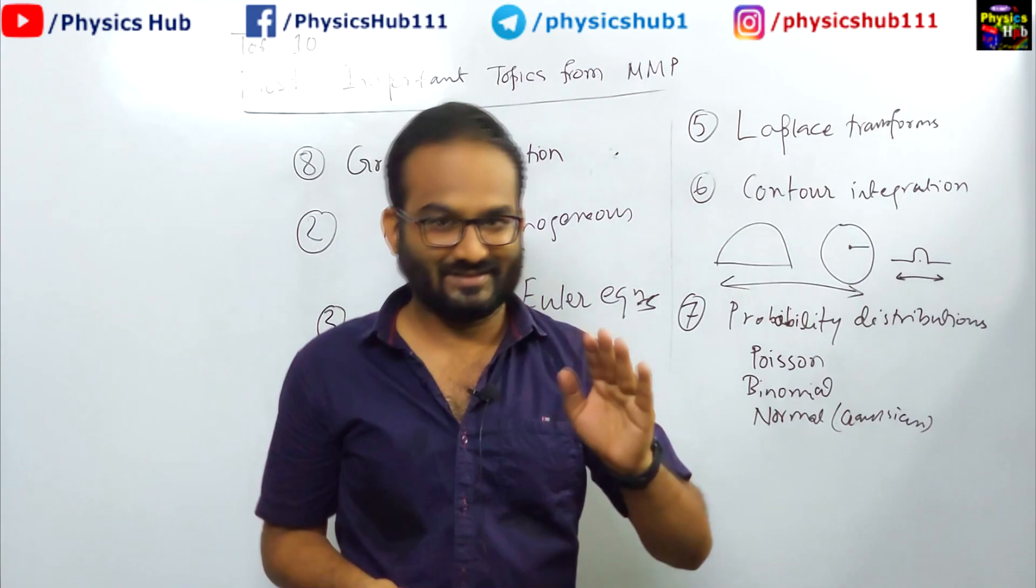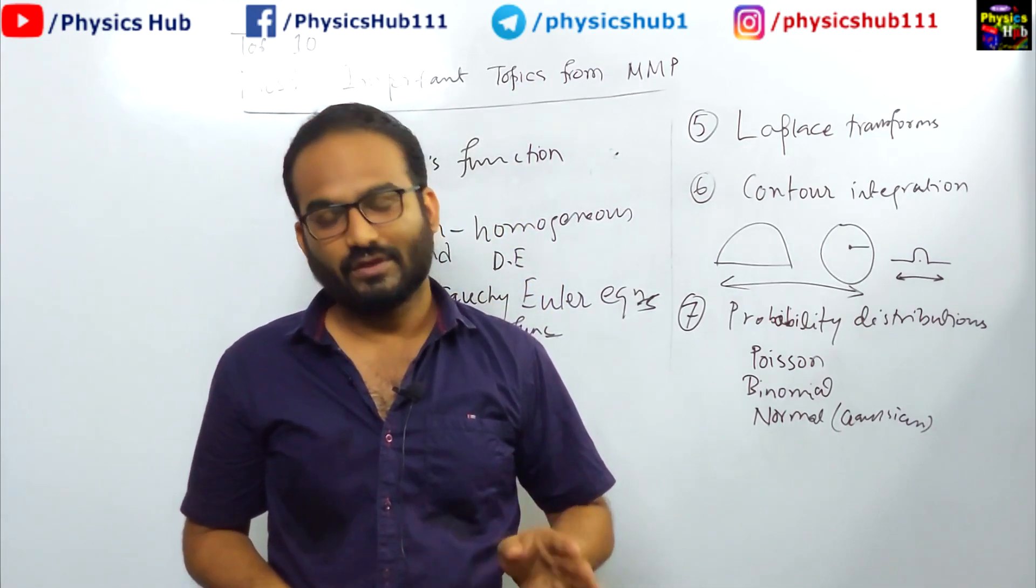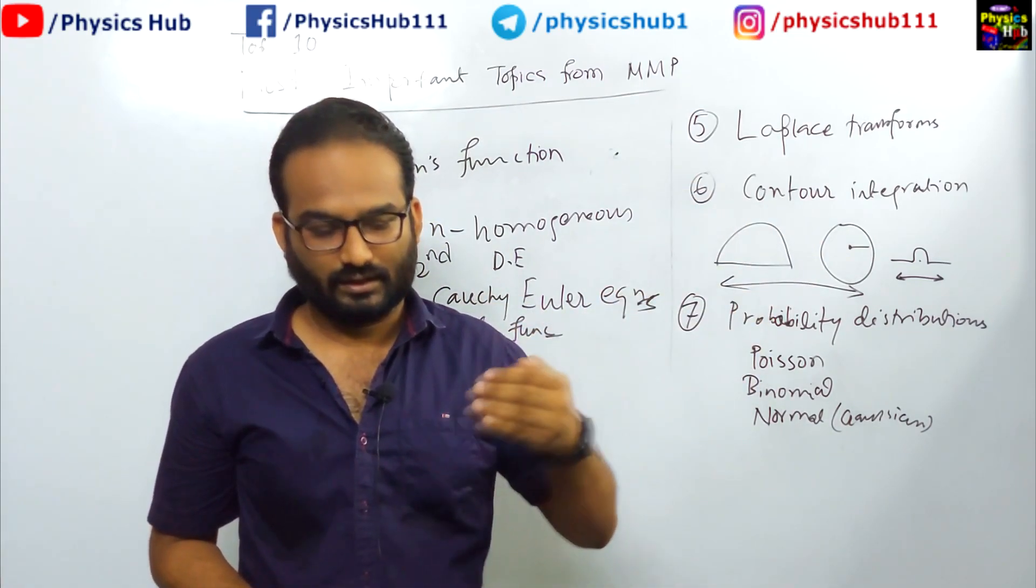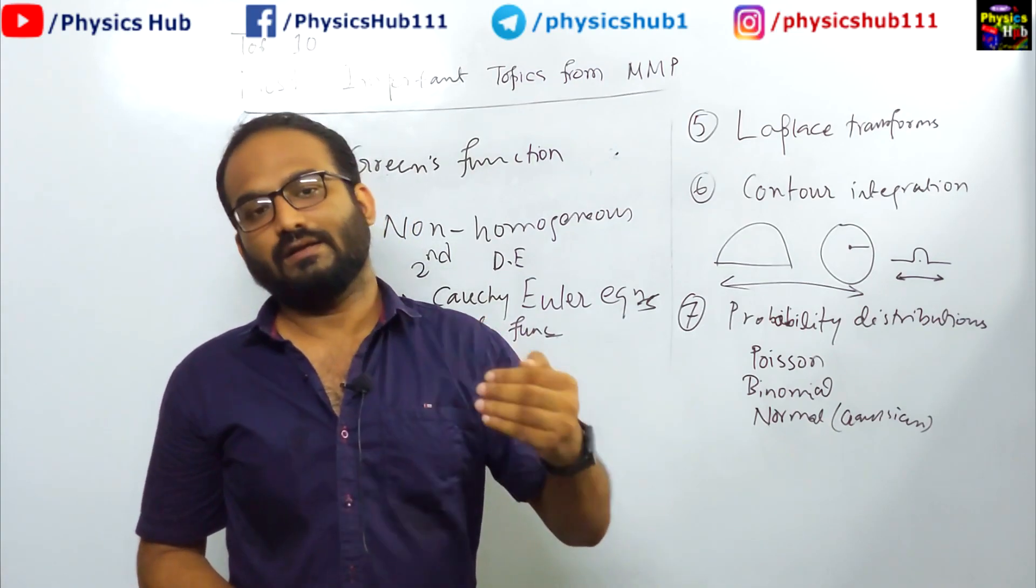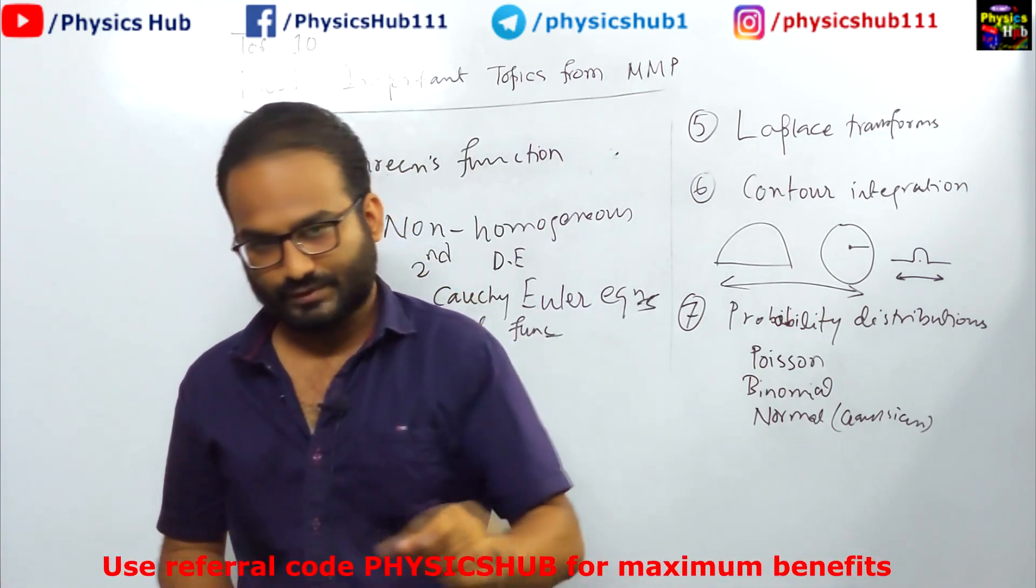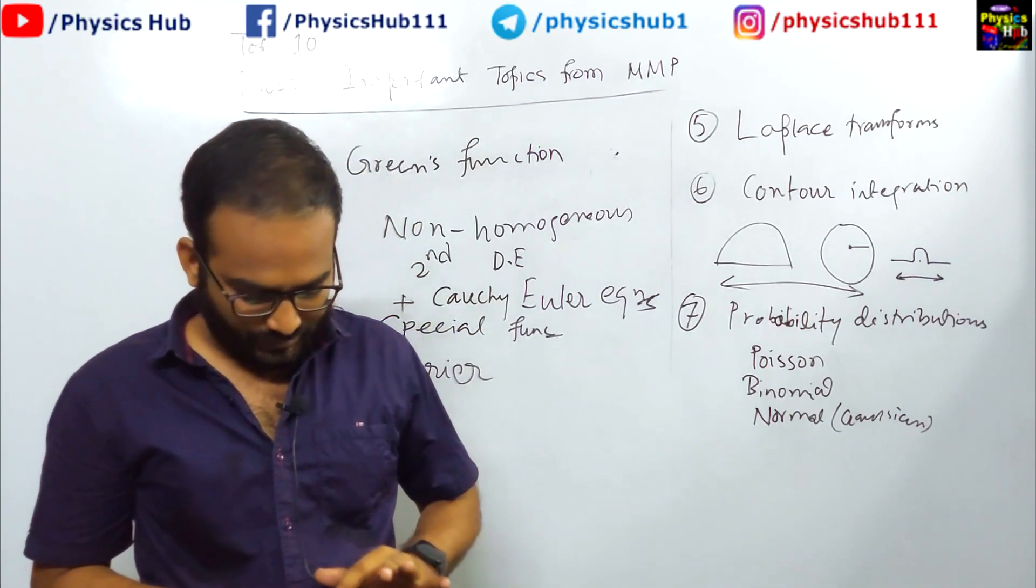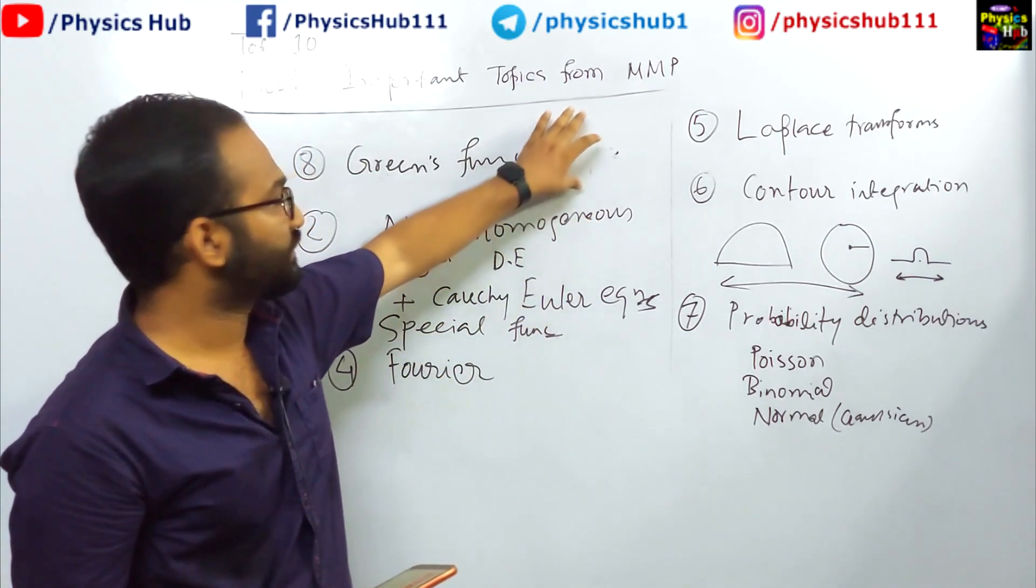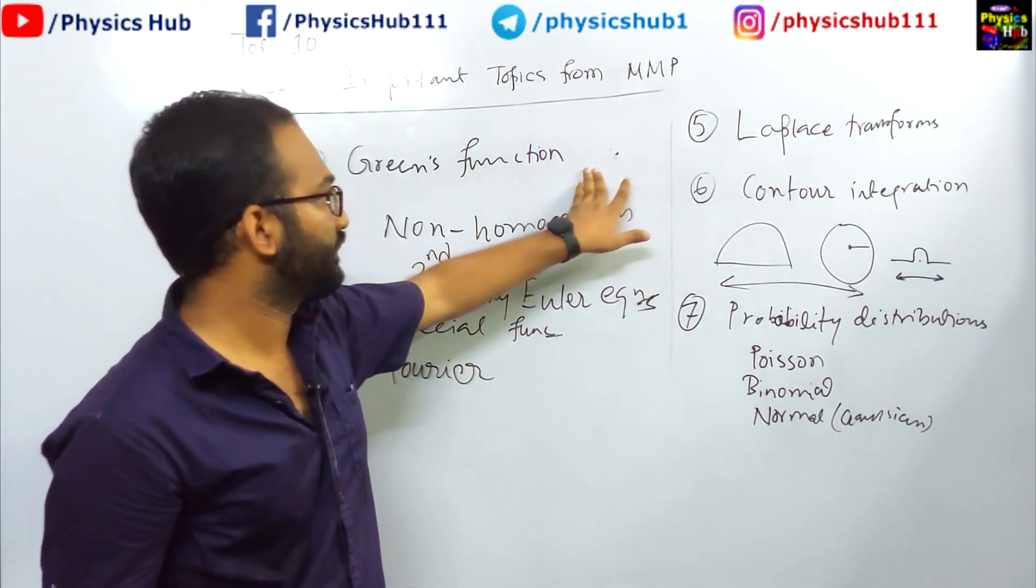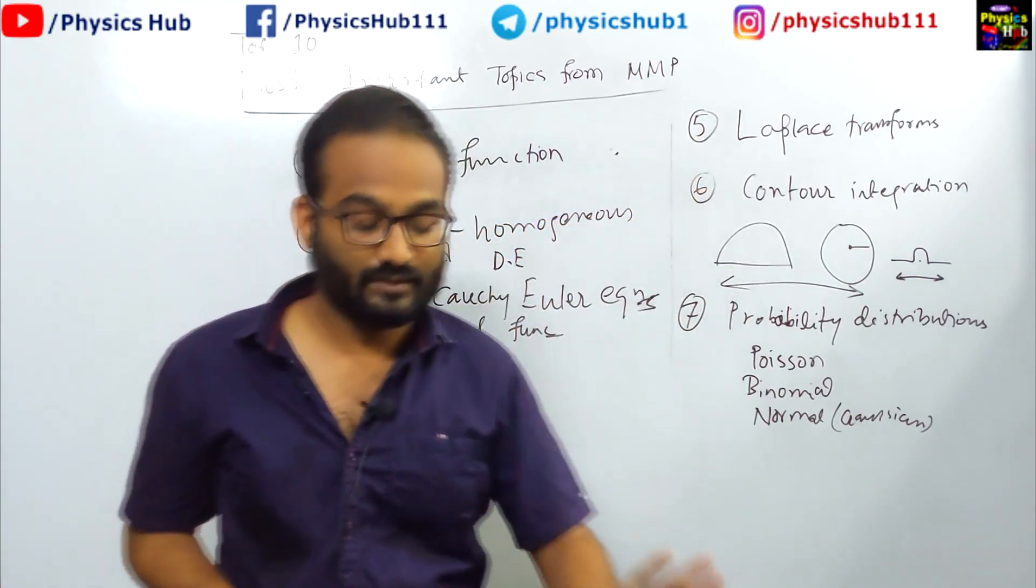In fact, when I was giving the net exam, I solved the Green's function problem by just using the property. You will solve some problems and you will get to see a pattern of how the solutions are coming, and you will get an intuition that how you can directly pick up the correct options from the given options. Those who have attended my class of Green's function will definitely be able to solve the problem.